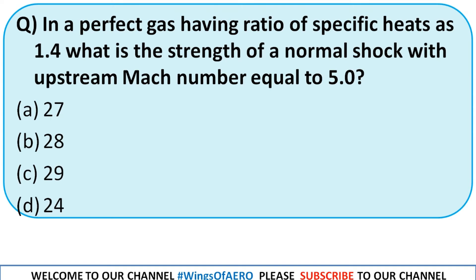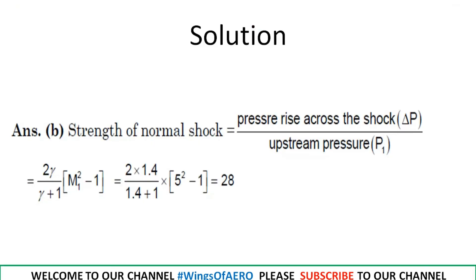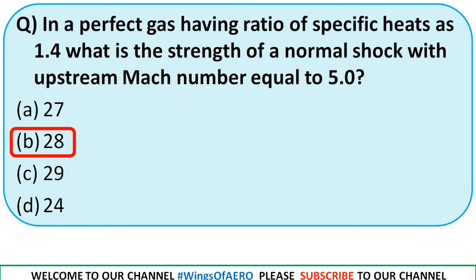In a perfect gas with γ = 1.4, what is the strength of the normal shock wave with upstream Mach number M₁ = 5.0? The strength of a normal shock wave is defined as the pressure rise divided by upstream pressure. Using the formula: (2γ/(γ+1)) × (M₁² − 1), and substituting γ = 1.4 and M₁ = 5, we get a shock strength of 28. So the right option is option B.